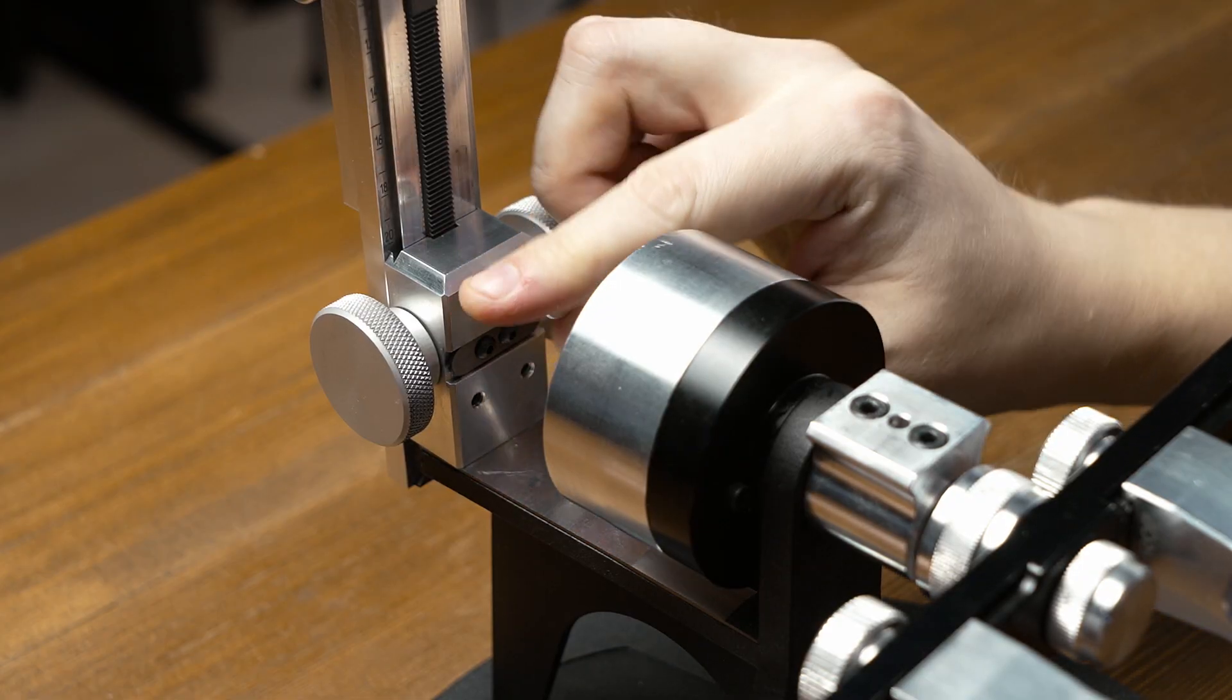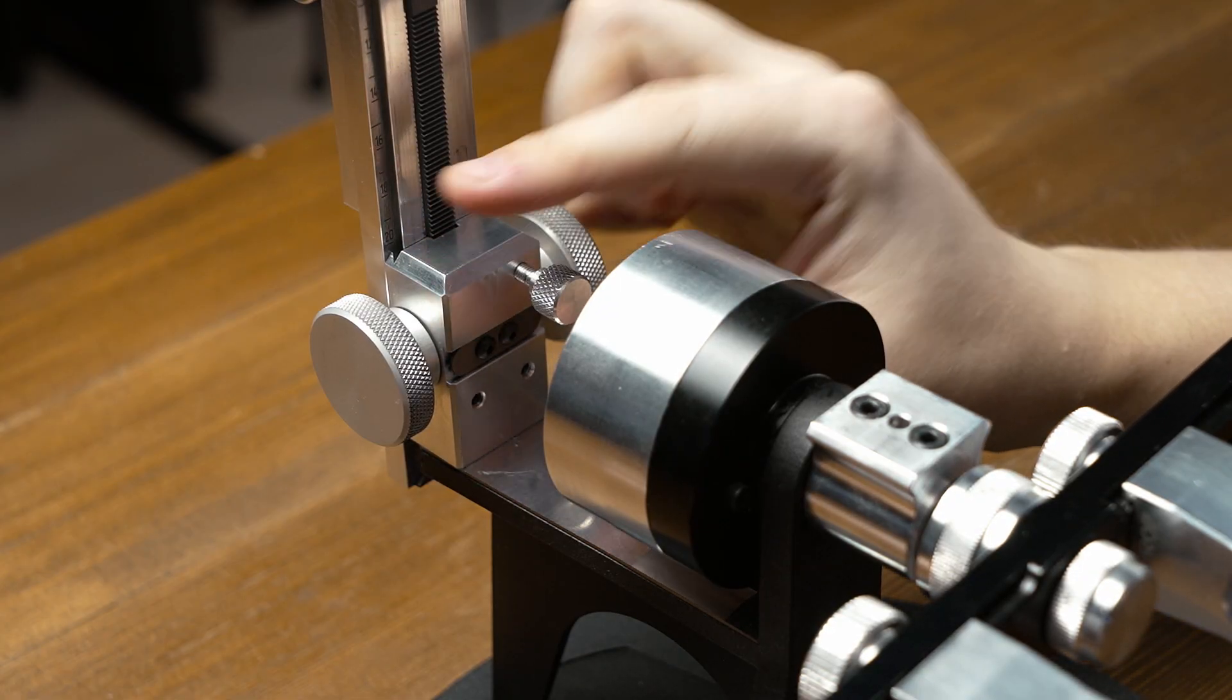You can easily adjust the lifting unit at home using just a 2mm hex key. First of all, let's loosen the fixing screw or you can even unscrew it.